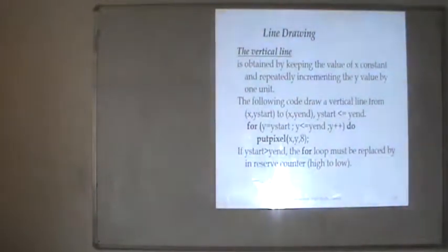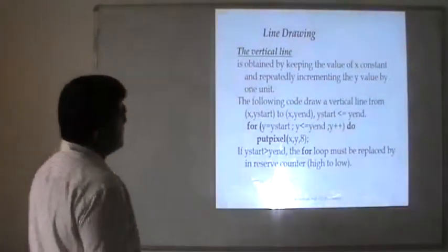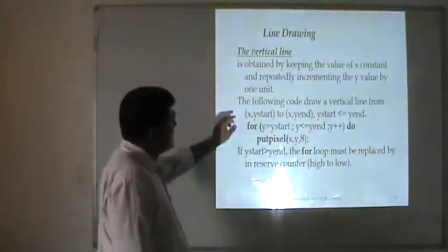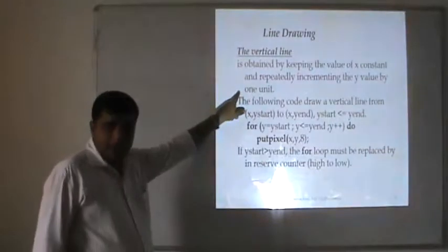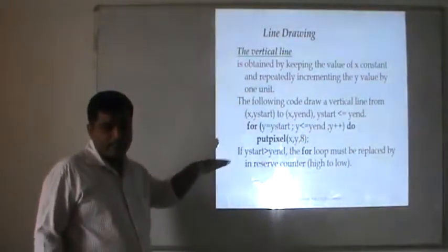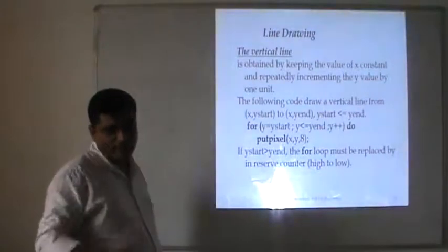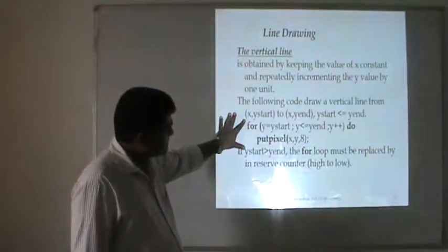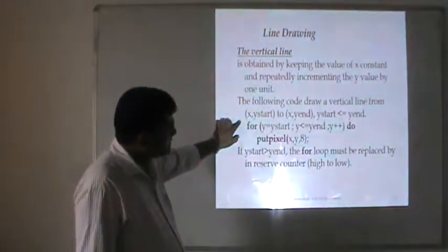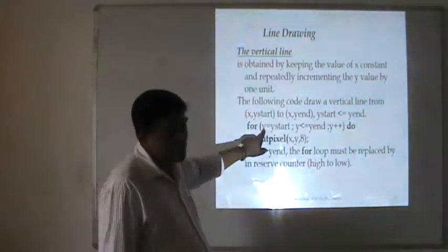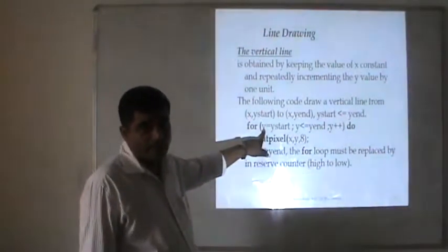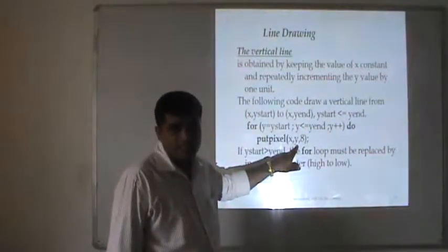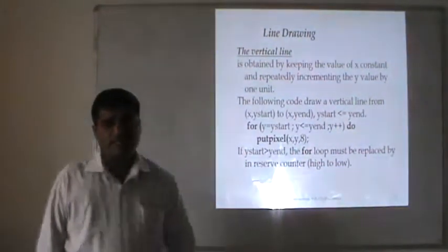For vertical line drawing, it is obtained by keeping the value of x constant and repeatedly incrementing the y value by one unit. In this case, the value of x remains constant and the y value is varied. The loop uses the same structure but increments y, calling putpixel(x, y, a), which is the Turbo C environment function.